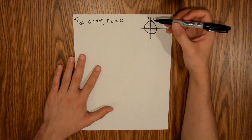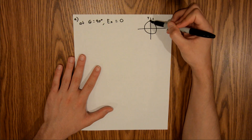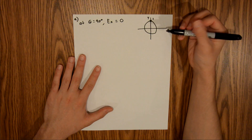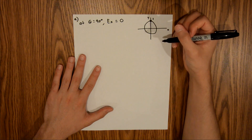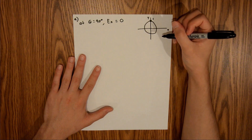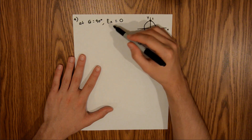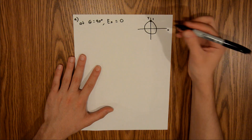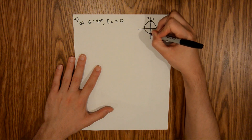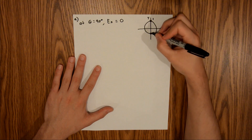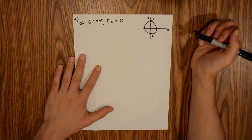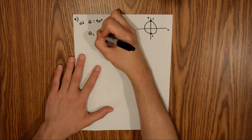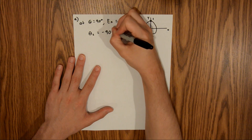At 90 degrees, the net electric field due to bead one is strictly in the y direction, which means that the net electric field due to bead two must also be only in the y direction, so that there is overall no net electric field in the x direction. If that is the case, bead two must also be on the y-axis, and so our angle for bead two is equal to negative 90 degrees.